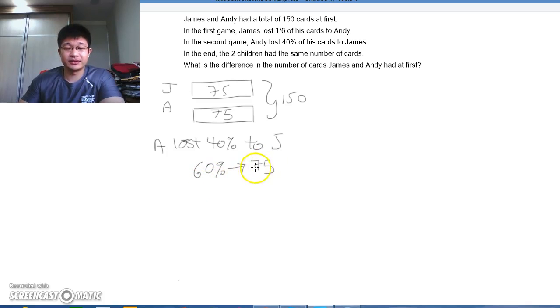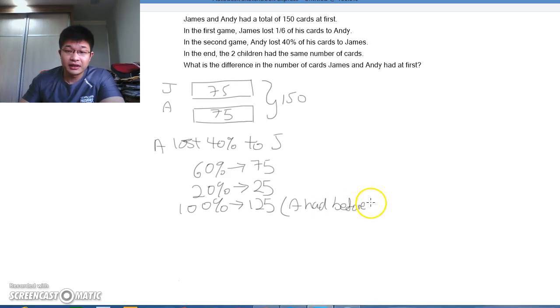We don't go into 10% or 1% because we end up with decimals, so we go into 20%. 20% would therefore be 25, and then we can find out 100% would be 125. So this 125 is actually the number of cards A had before second game.